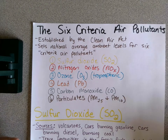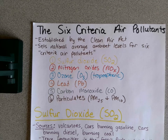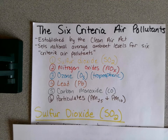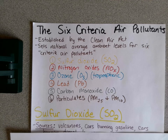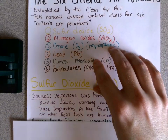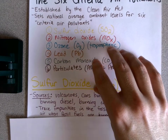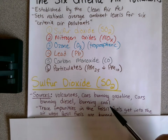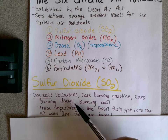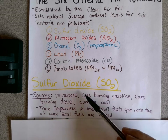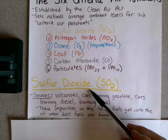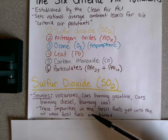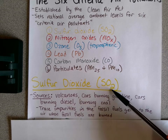I want to talk about each one — the sources, the human health impacts, and the environmental impacts. Starting with sulfur dioxide, abbreviated SO2. The sources are things like burning fossil fuels — coal, gasoline, diesel. What happens is there are trace impurities of sulfur in the fossil fuel, and when you burn it, it bonds to oxygen and causes SO2 to form.